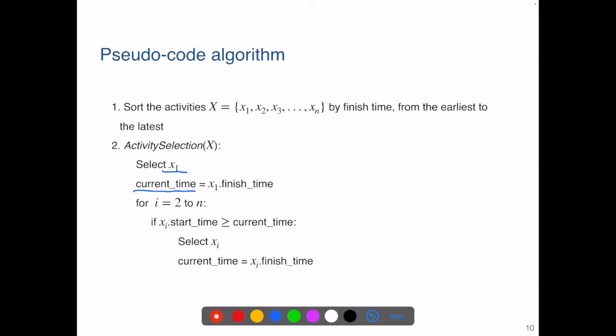We can do this by setting current time as X1's finish time. Then we can do a sequential search and find the next activity that starts no earlier than current time. Once we have found it, we add it to the selection and reset current time. This should seem really straightforward to you. So the next question is, what's the complexity of this algorithm? Sorting takes big O of n log n time, and the sequential search takes linear time. So overall, the entire algorithm has a complexity of big O of n log n. It is indeed quite an efficient algorithm.